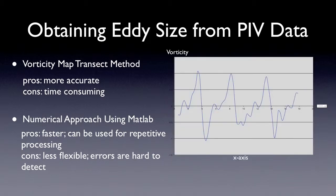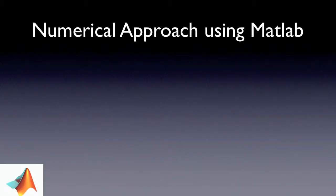And then, we can get the vorticity versus x-axis graph according to the transect. As you can see in the picture, the place where peaks appear indicates the location of the vortex core. So, the eddy diameters would be the intercepts on the x-axis. This method is relatively accurate but very time-consuming. So, I wrote a MATLAB routine. And we can get the eddy size and some other information more quickly. But, the disadvantage of the MATLAB routine approach is that some errors are very hard to notice.